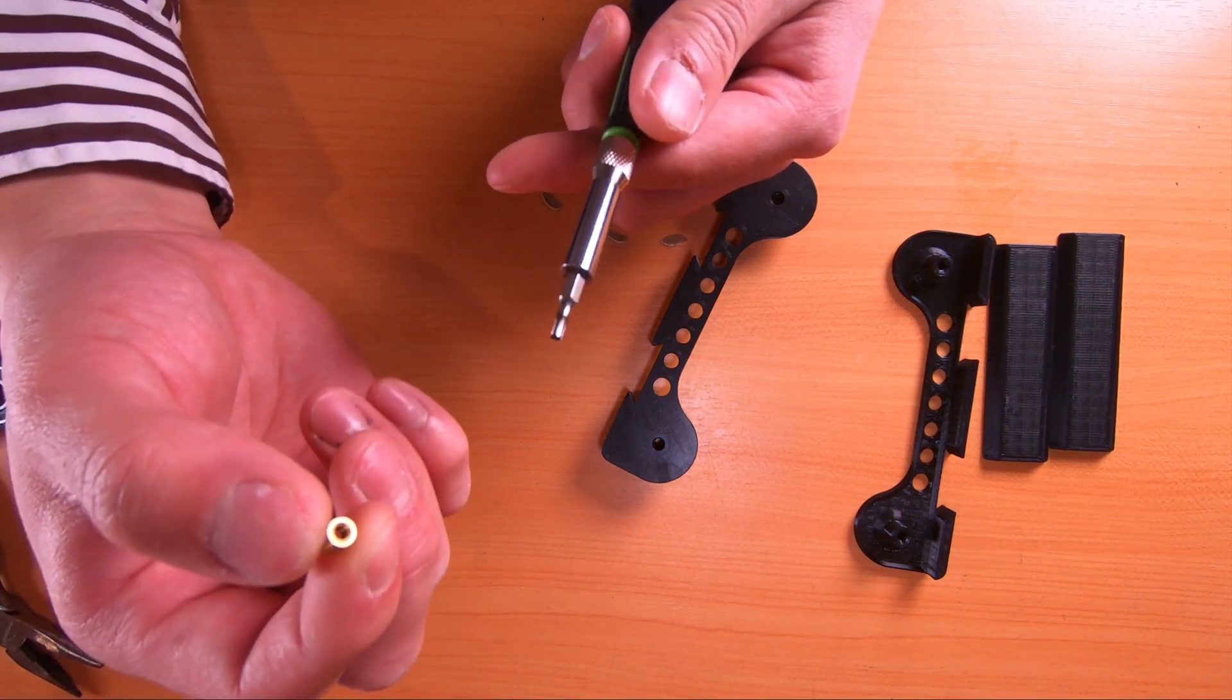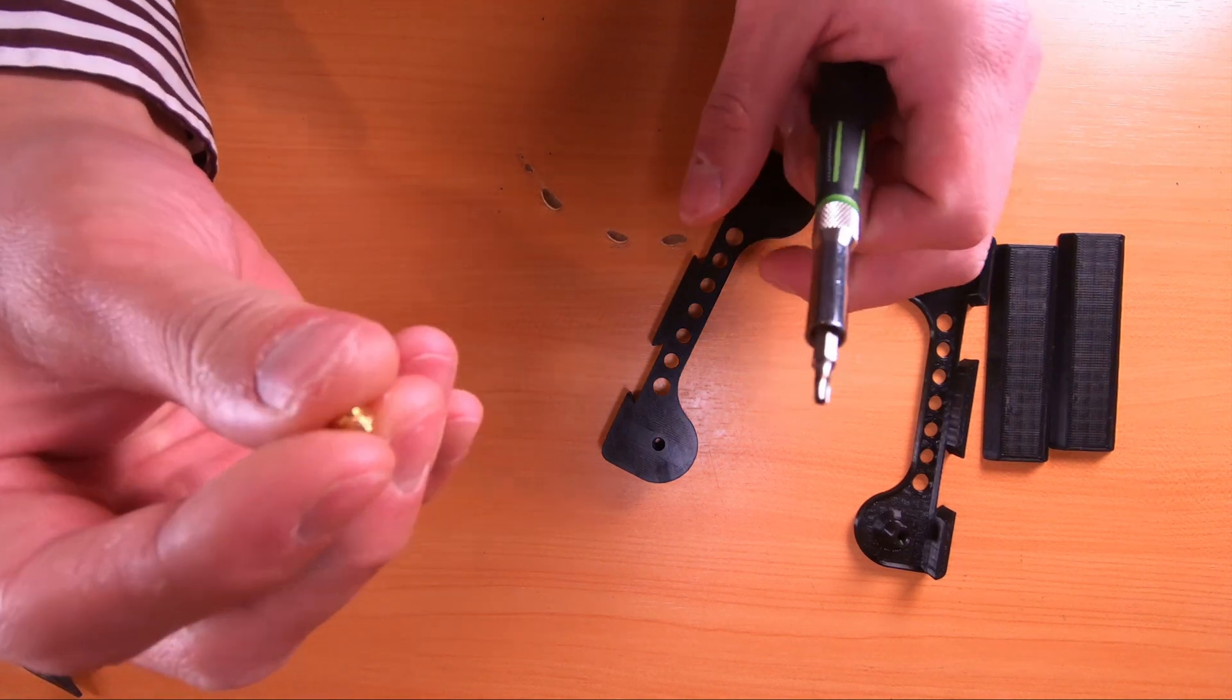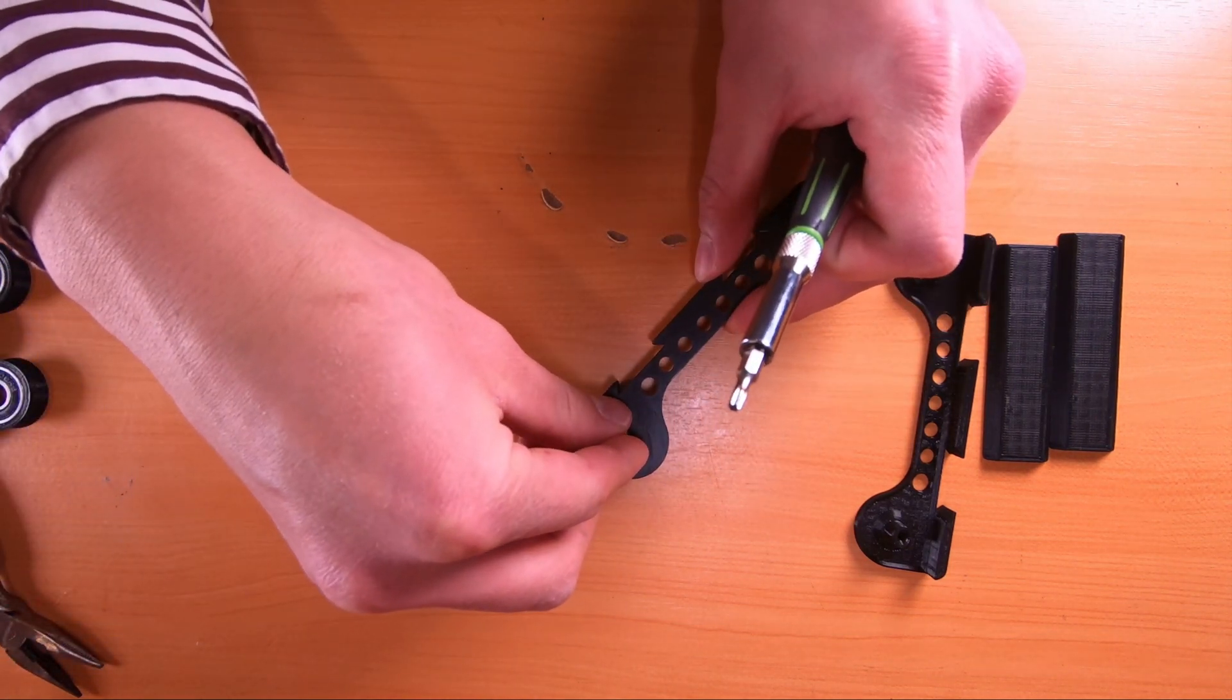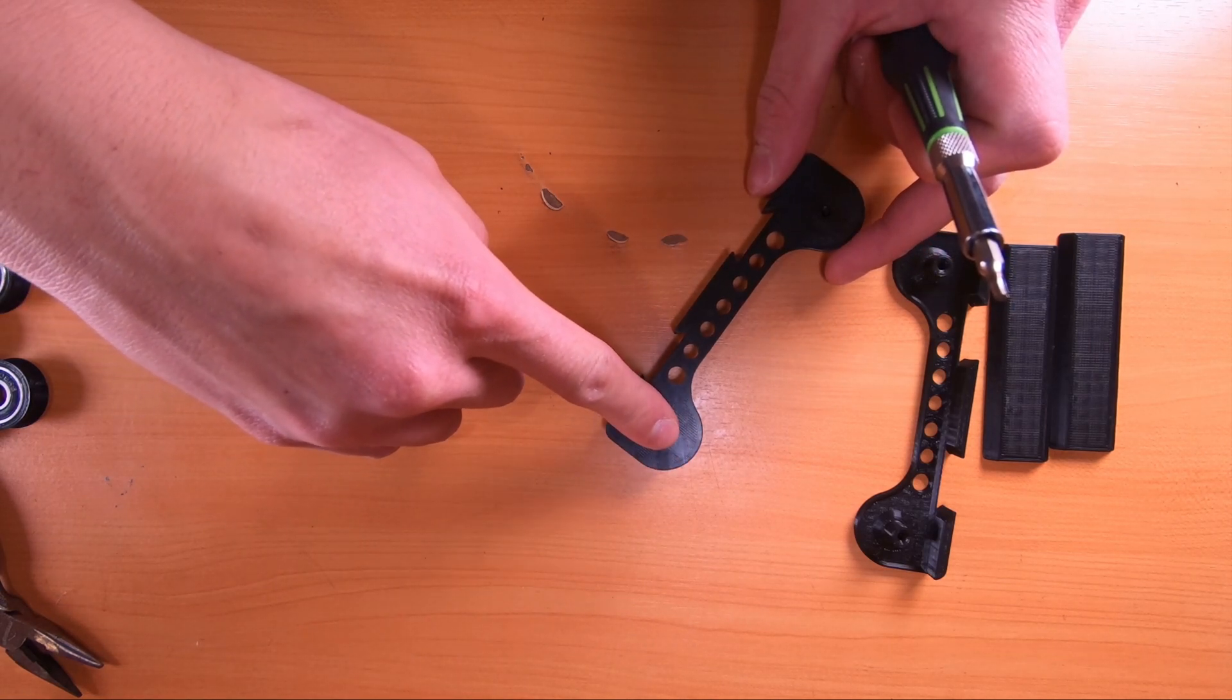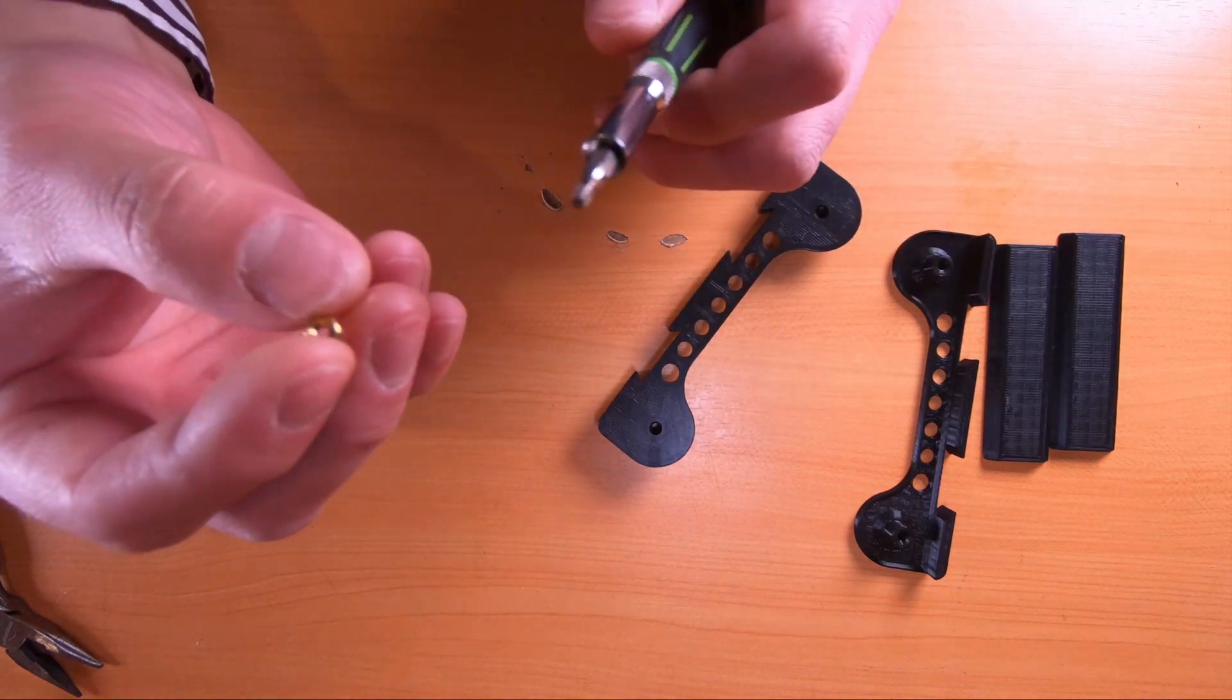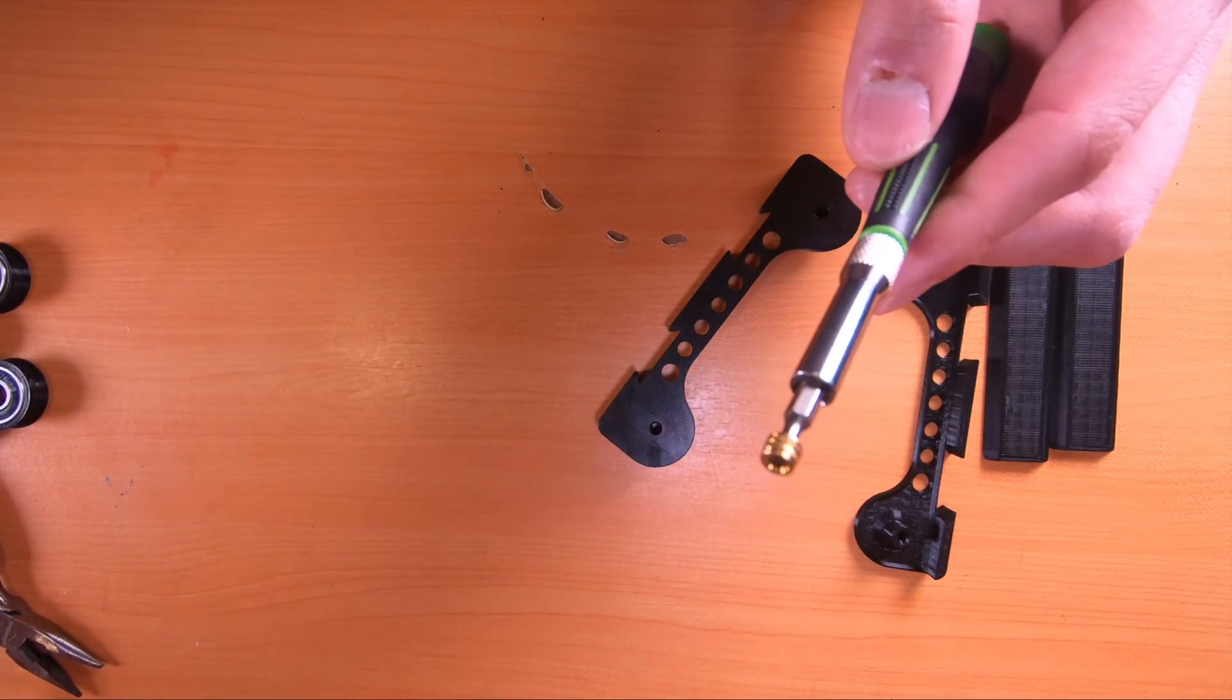If you're not using a soldering iron and you want to do it this way, you can. If you are using a soldering iron, all you have to do is take the heat cert, put it over the hole, and then just put the soldering iron and heat it up until it sinks in. Alright, but in this case, I'm going to use a screwdriver. Go ahead and put that on the tip of the screwdriver.